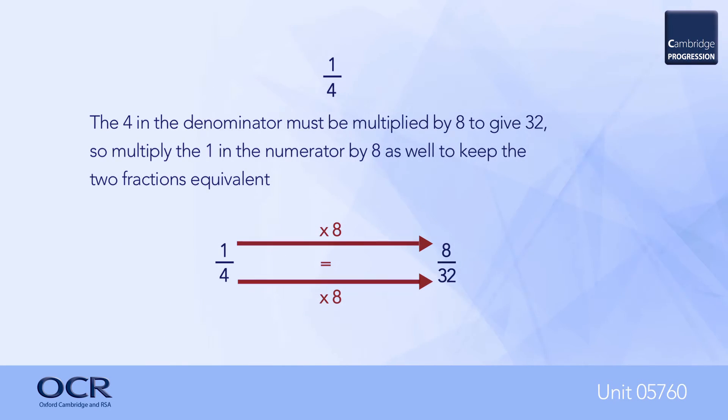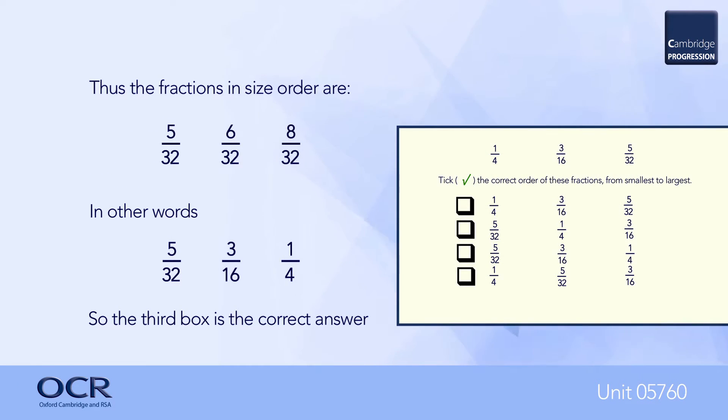The next two slides show the conversions of 1 quarter and 3 sixteenths into fractions with a common denominator of 32. This simplifies comparison between the sizes of the three fractions by looking at the numerators as shown here.